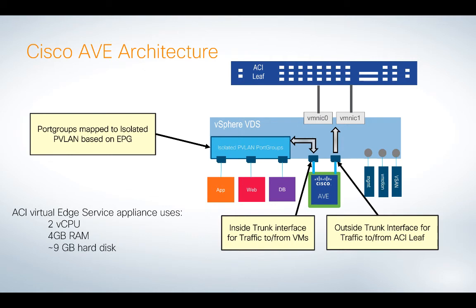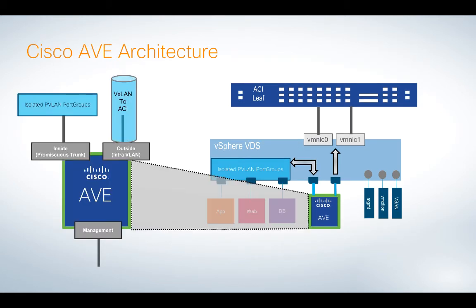We attach all of our endpoints — apps, web, DB — in those isolated port groups. The other leg of the AVE is actually a trunk that connects through the physical VMNICs of the ESX host and on into the ACI fabric.